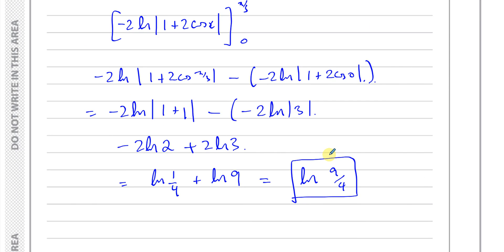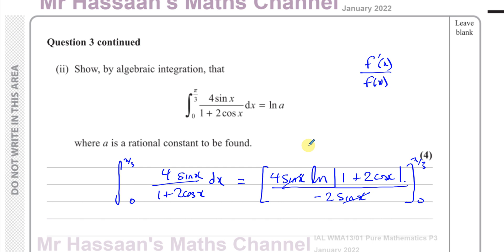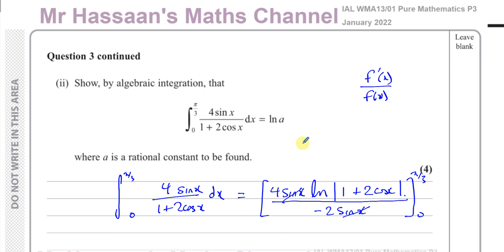So ln(9 over 4) is the answer to part 2 of question number 3, and that completes question number 3 from the P3 January 2022 International A-Level Edexcel paper. You can subscribe to the channel by the link at the end, find other questions from this paper in the link over here, and other questions to do with integration from P3 in the link in this area. Thank you for watching and see you soon.